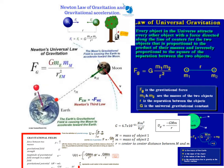If we want to calculate the force of the earth on the moon, we use this equation: G times the mass of the earth, times the mass of the moon, divided by the distance between the moon's center and the earth's center squared. That gives us the force that keeps the moon moving in a circle.